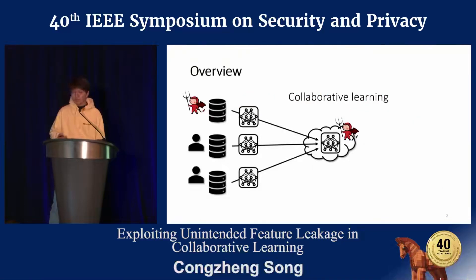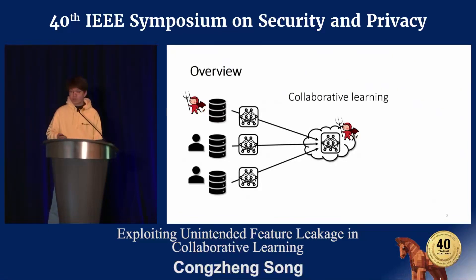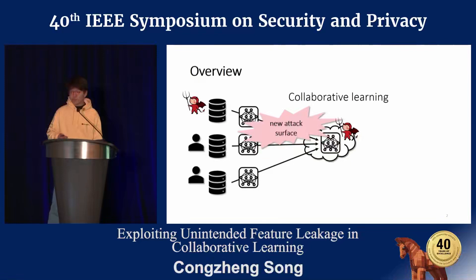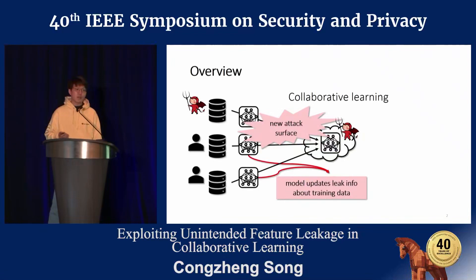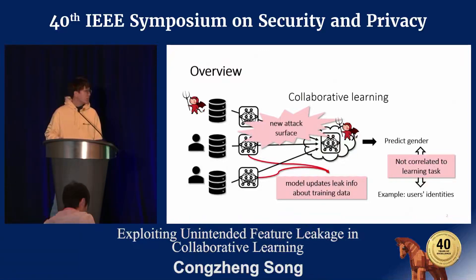Here's an overview of my talk. We consider the scenario of collaborative learning, where multiple clients wish to train a machine learning model together, and one of the participants or the server could be malicious. We demonstrate that collaborative learning provides a new attack surface. Throughout training, adversaries can learn information about other participants' data from the model updates. Moreover, the leaked information is not correlated with the learning task — so if the model is trained to predict gender given a face image, an adversary can learn information such as user IDs.